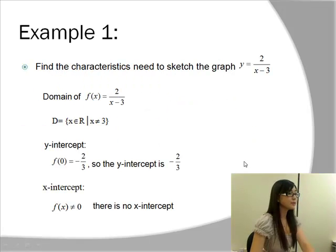Let's take a look at example 1 from your learning resources. It asks us to find the characteristic needed to sketch the graph y equals 2 over x minus 3. Well, first we have to find what the domain is.